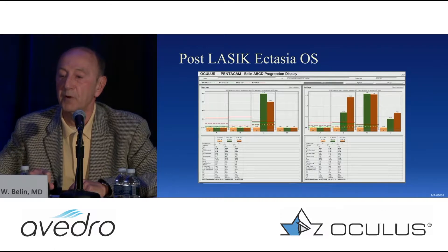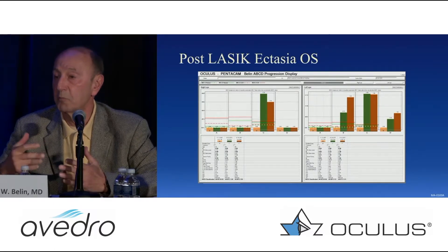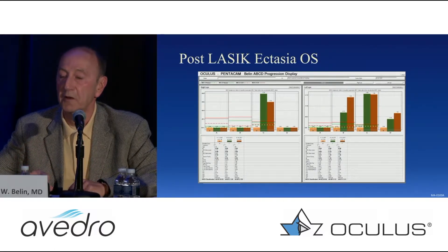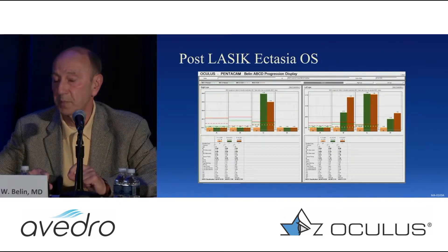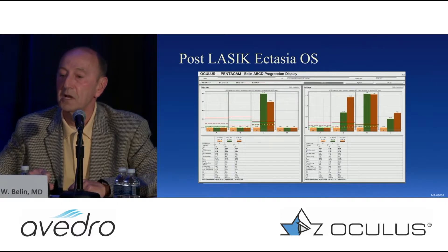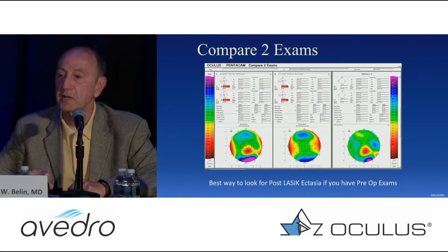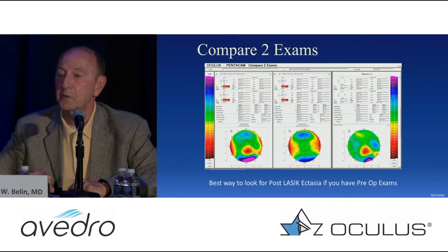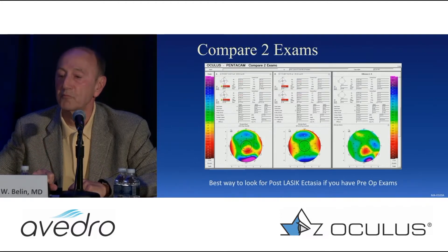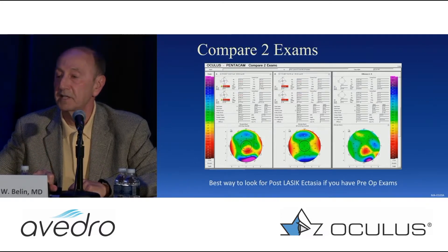You'll notice on the map on the left, the cornea is obviously abnormal because we've thinned it. But if you compare it to the one on the right, you'll see changes on the posterior surface, which we wouldn't expect post-refractive surgery. The single best way to look for post-LASIK ectasia, if you have preoperative data, is to compare pre-op and post-op posterior surface. We subtract the post-op from the pre-op, and you'll see that big red on the bottom right — that's the ectatic region.